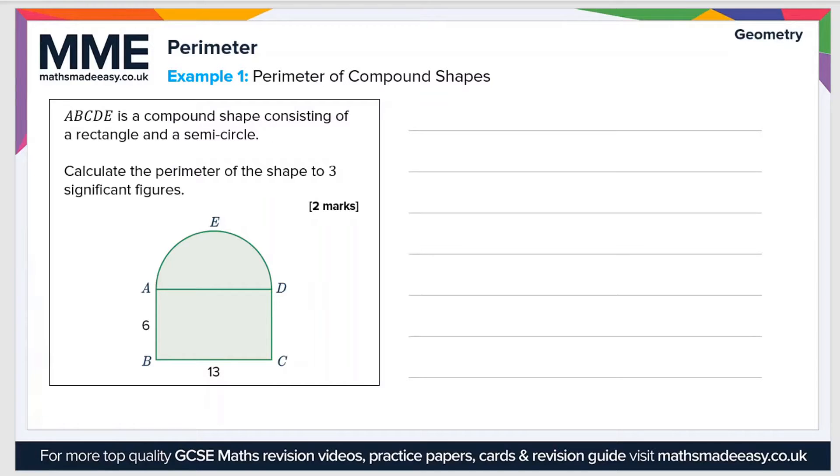If we take a look at an example question now: ABCDE is a compound shape consisting of a rectangle and a semicircle. Calculate the perimeter of the shape to three significant figures. So there's two unknown sides here. There's the curved side, which is AED, and then there's this side here, CD. This side is pretty easy to work out.